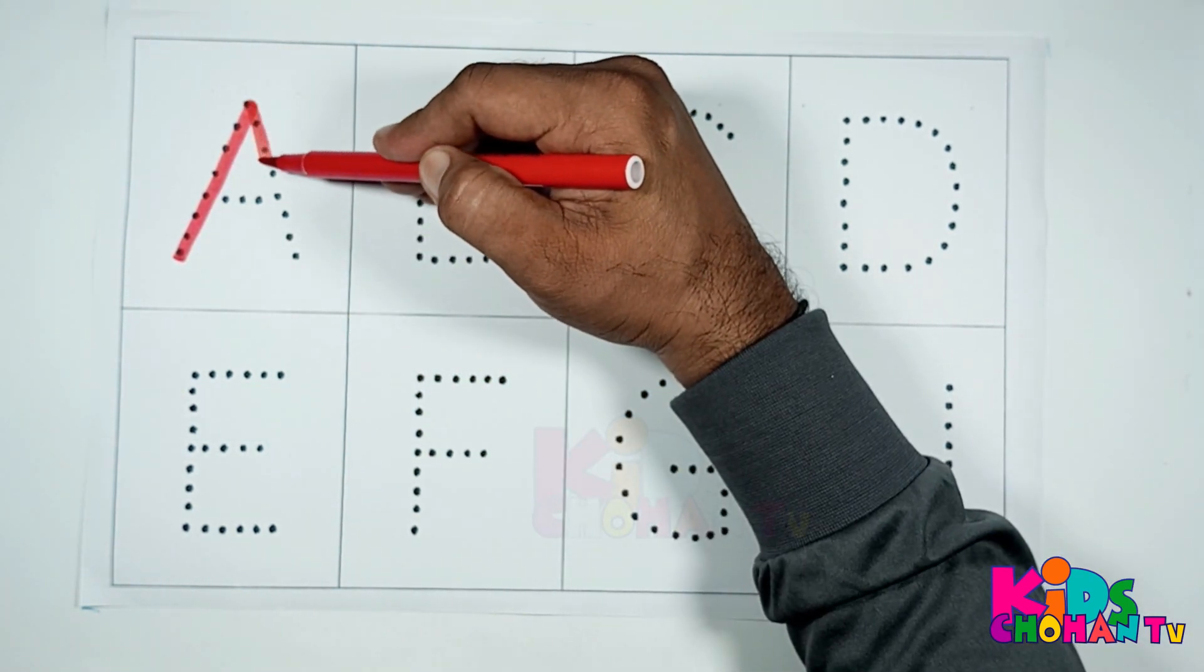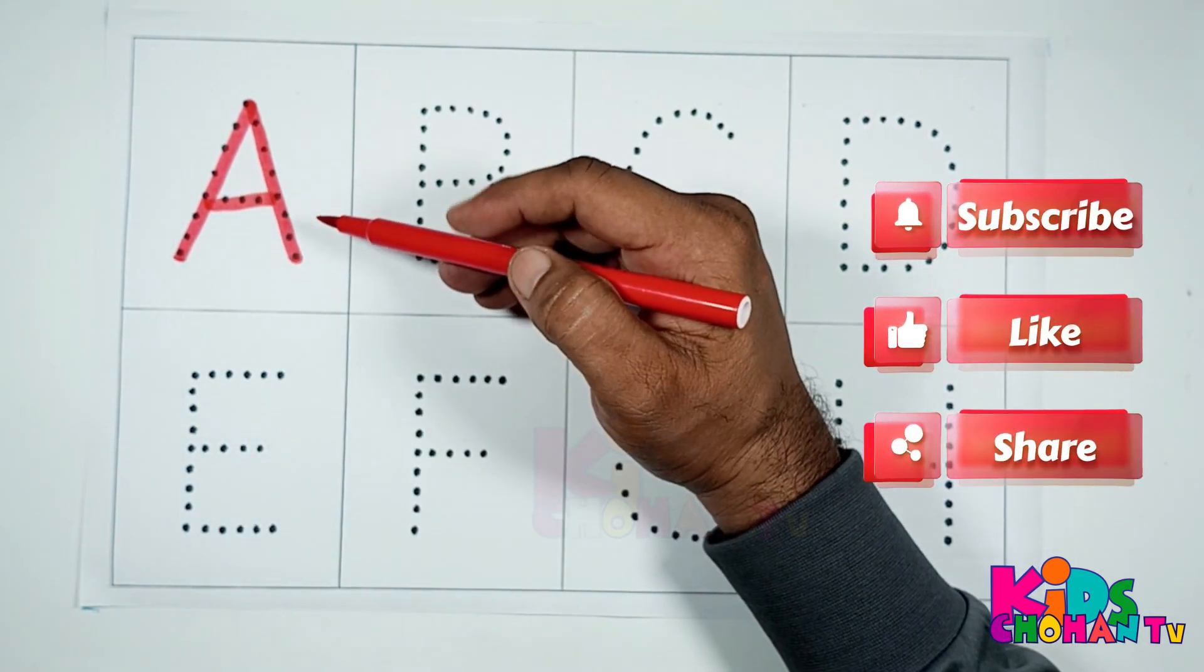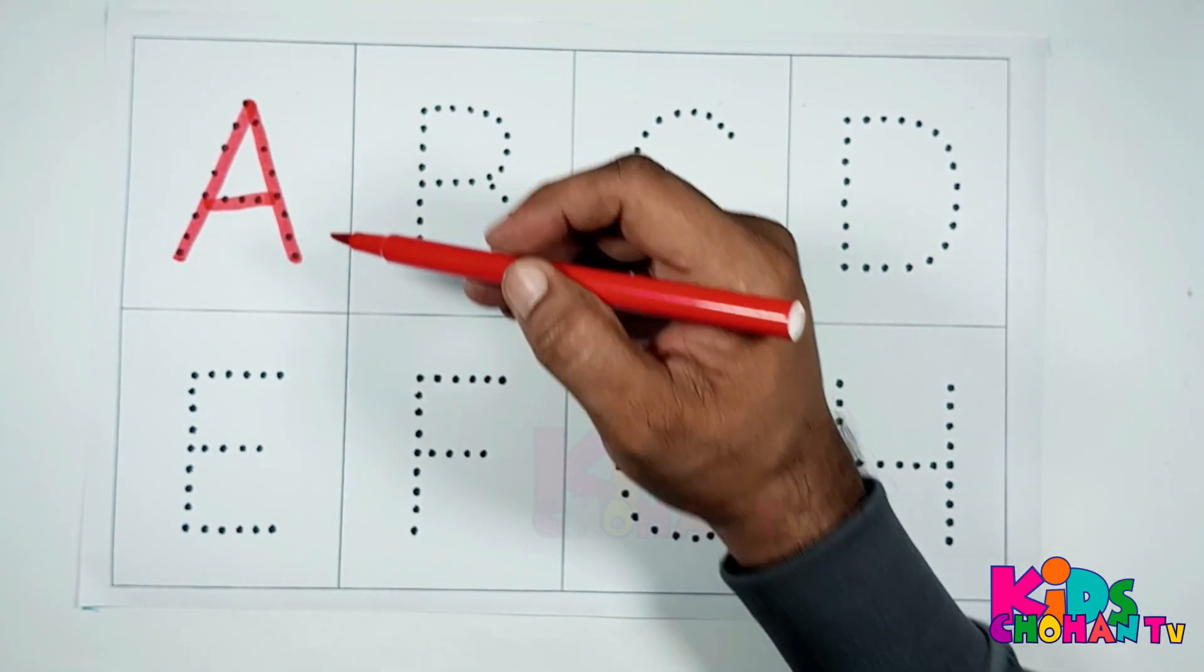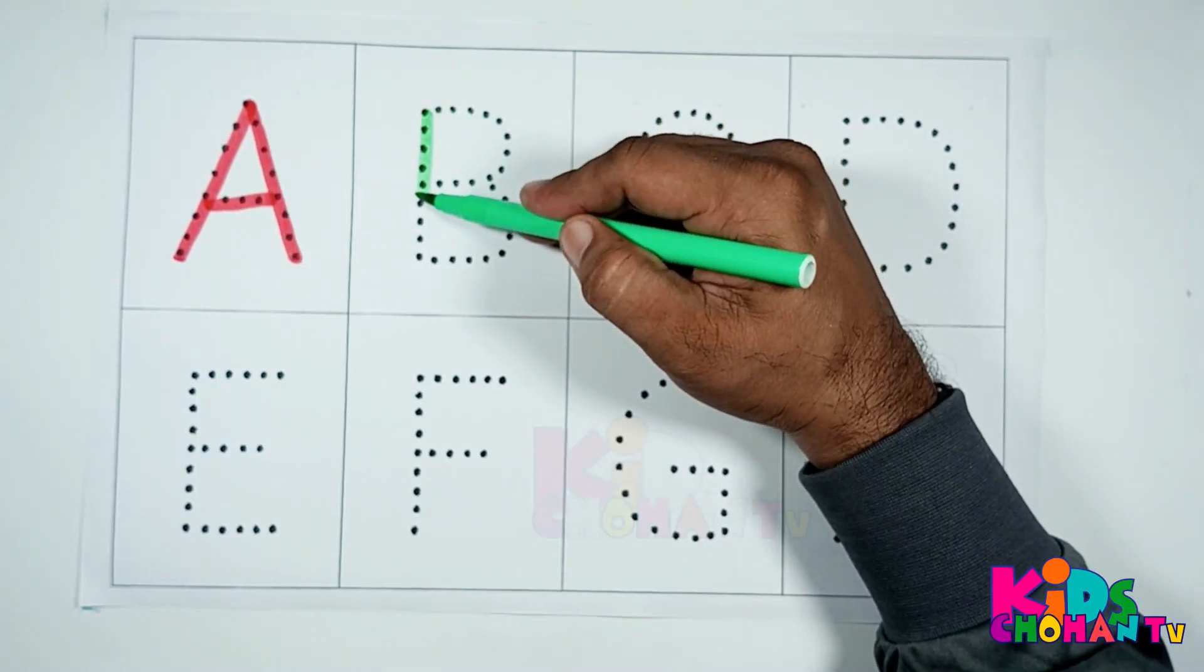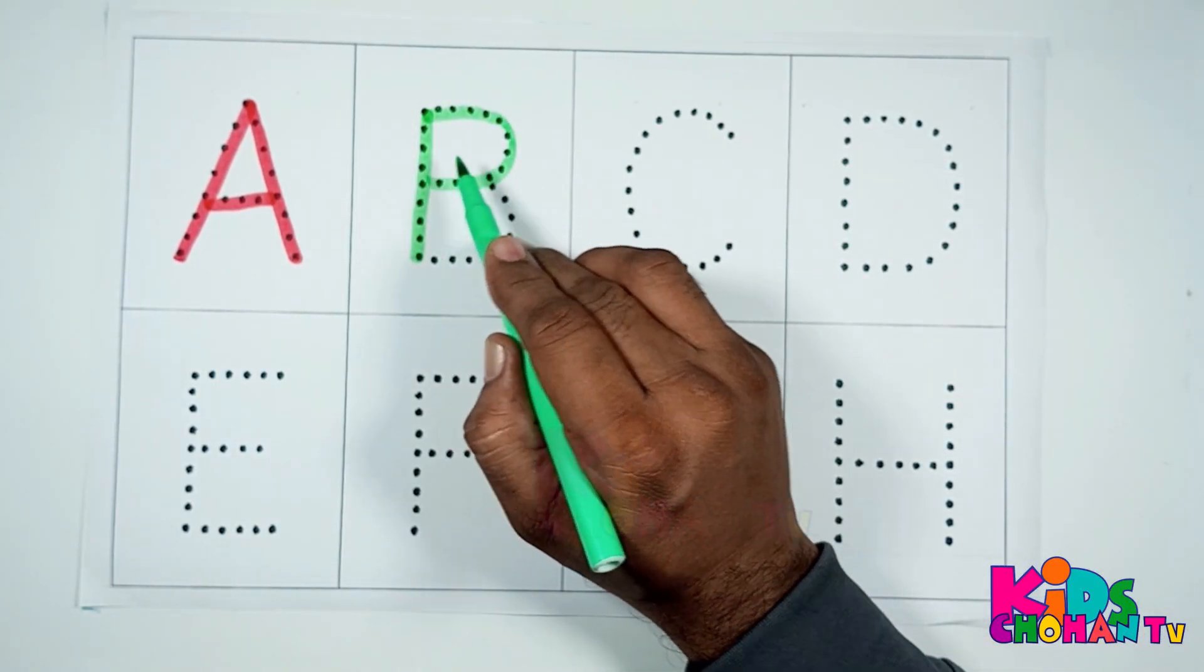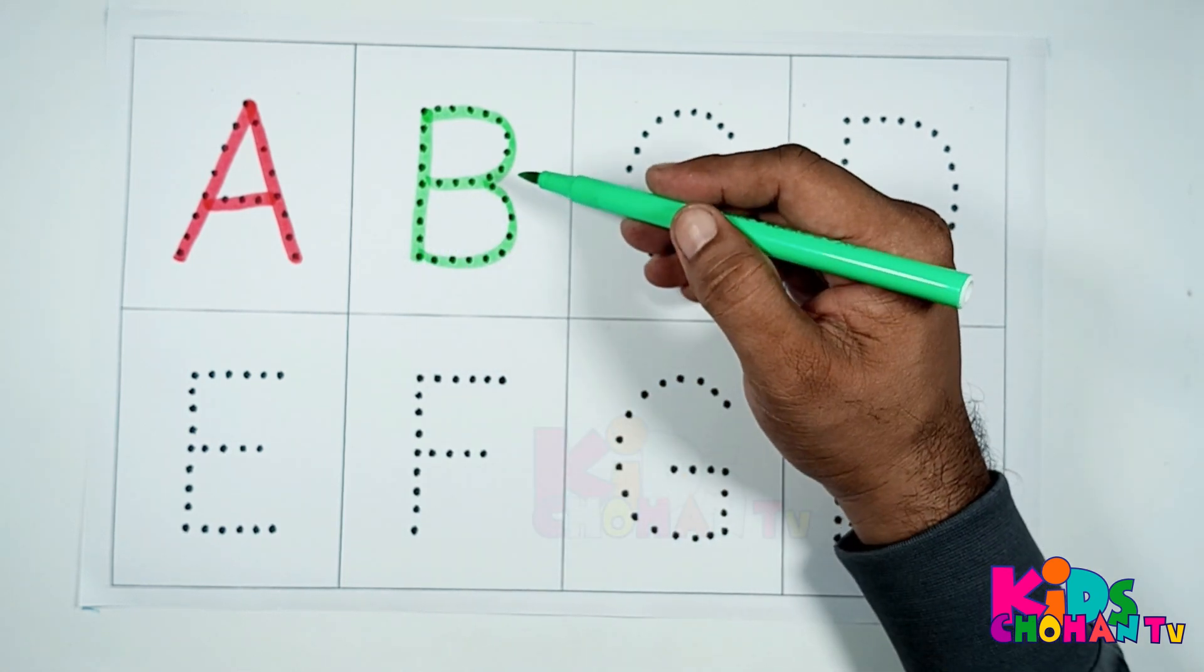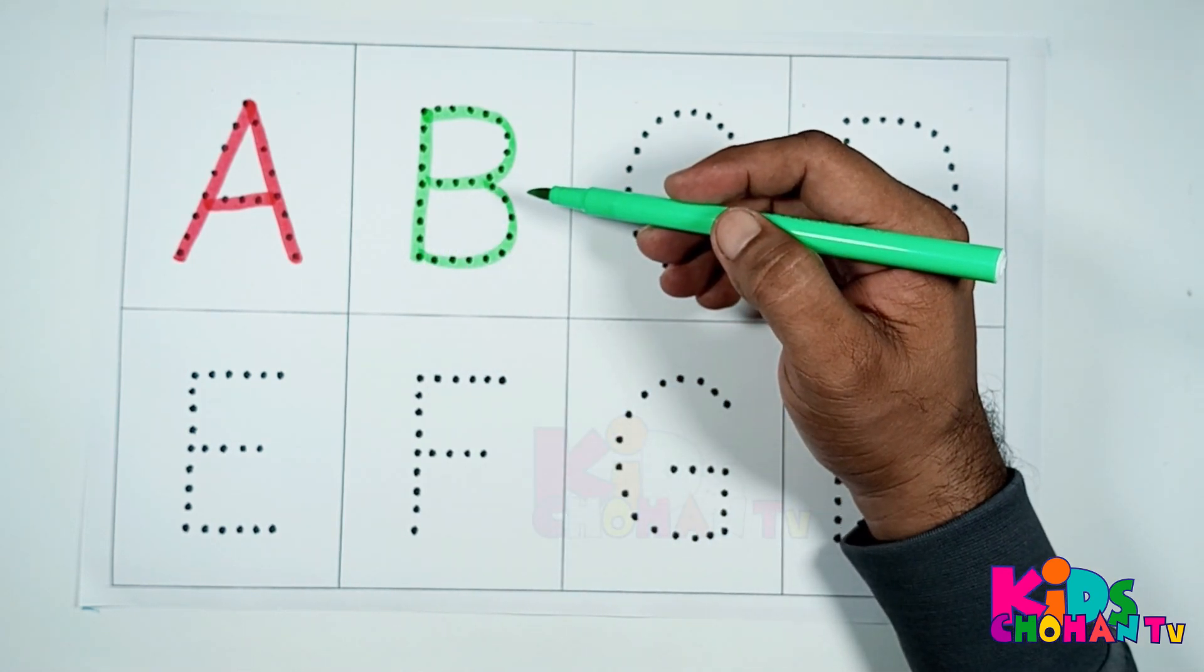This is letter A. A, A for apple. We are tracing letter B. This is letter B for ball.